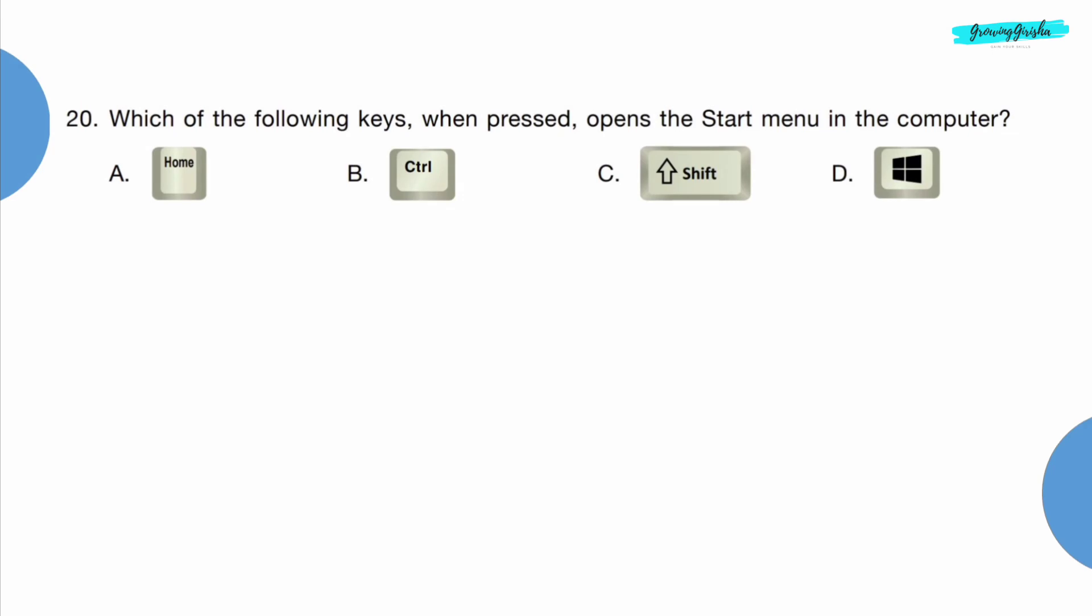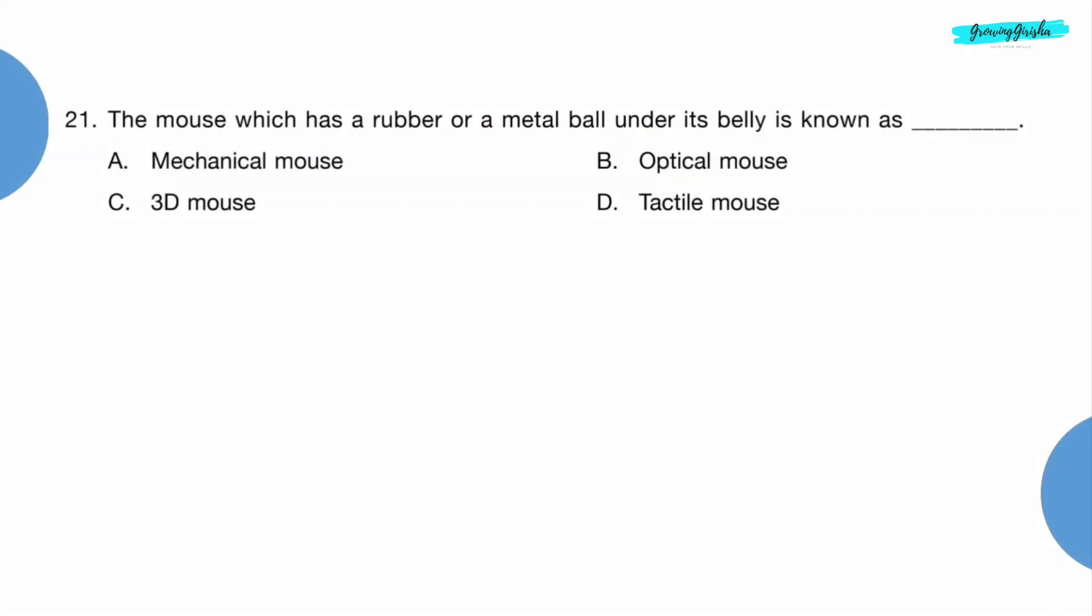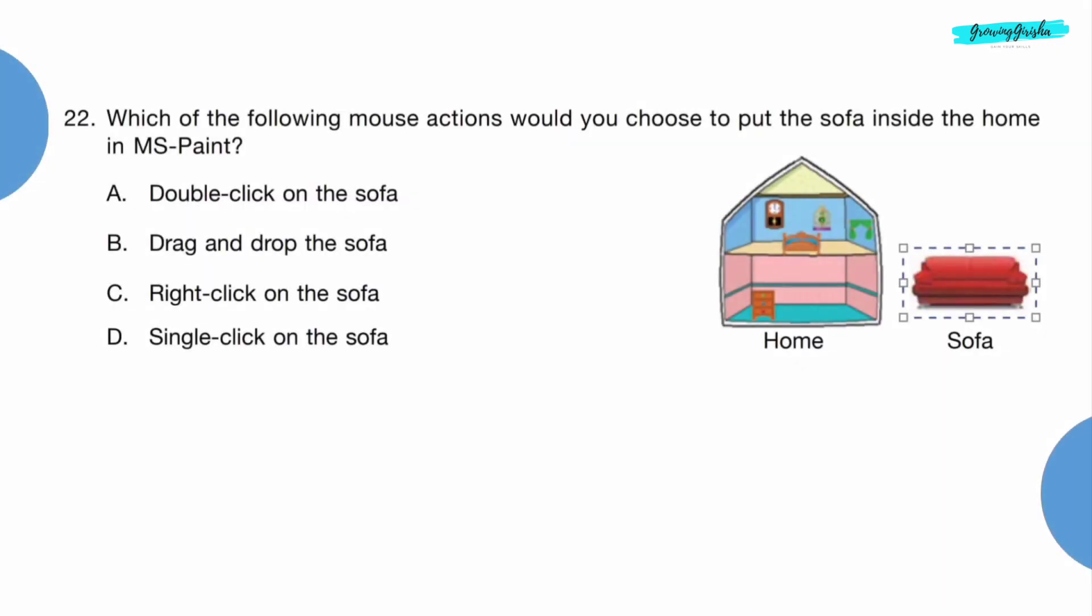Question 20: Which of the following keys, when pressed, opens the start menu in the computer? Option D, Windows key. Question 21: The mouse which has a rubber or a metal ball under its belly is known as dash. Option A, mechanical mouse.